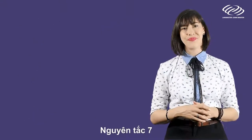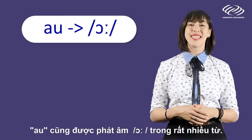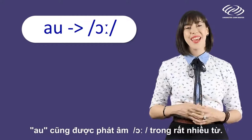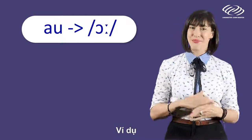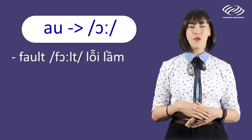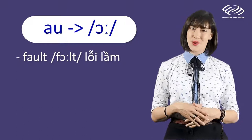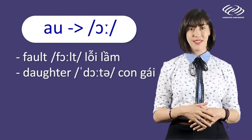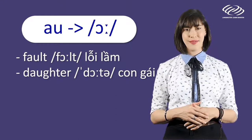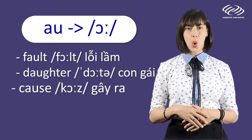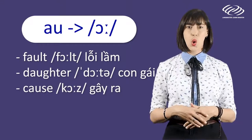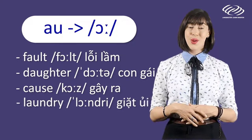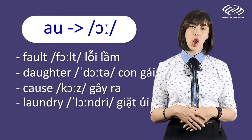And the last, number seven: A-U is pronounced as O in a lot of words. For example: fault, daughter, cause, laundry.